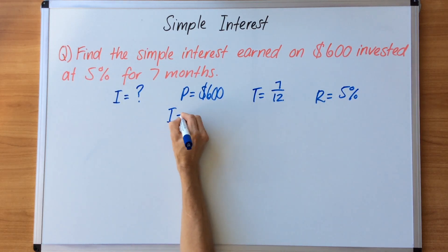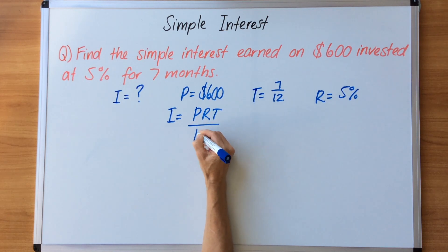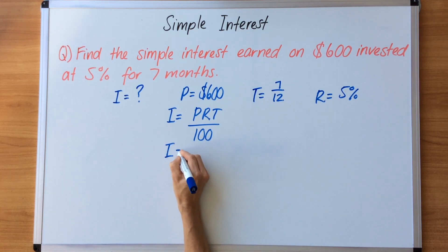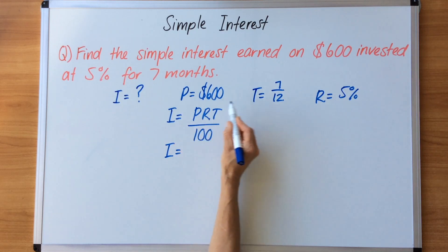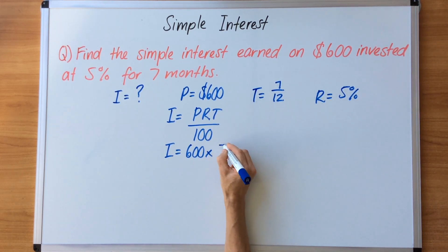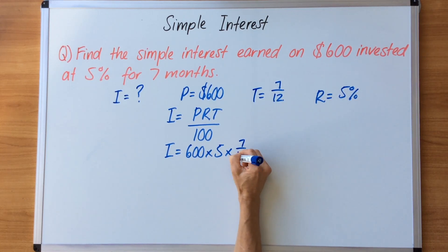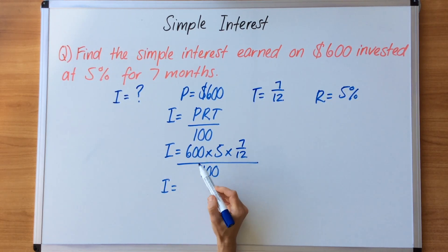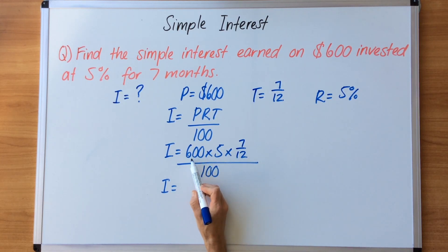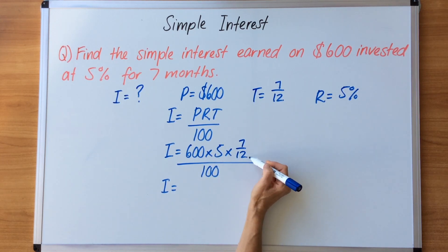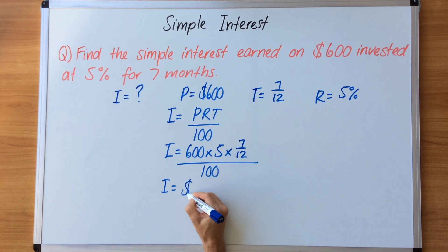Write the rule: interest equals PRT divided by 100 — principal times rate times time divided by 100. Now substitute: P is 600, multiplied by 5 for the rate, multiplied by the fraction 7/12 for the time, divided by 100. On your calculator, work across the top — 600 × 5 × 7/12 — then divided by 100, and we get an answer of $17.50.